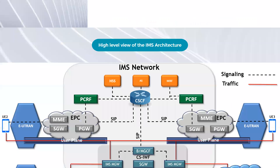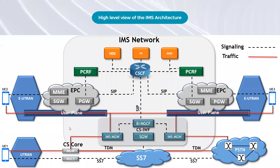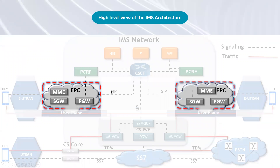At the heart of a VOLTE network is the Evolved Packet Core, or EPC, which is responsible for managing data and voice traffic. The EPC consists of several components, including the Mobility Management Entity, or MME, which handles the signaling and control for mobile devices, and the Serving Gateway, or SGW, which manages the data traffic.